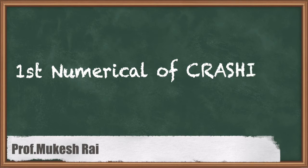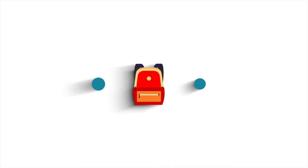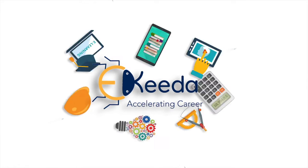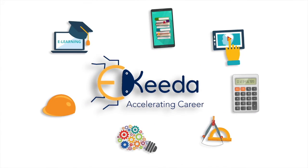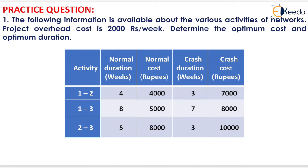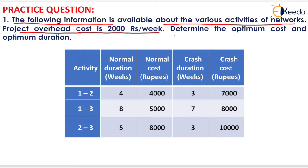Hello students, today we are going to solve the first numerical of crashing. The question states that the following information is available about the various activities of a network. Project overhead cost is Rs 2000 per week. We need to determine the optimum cost and optimum duration.